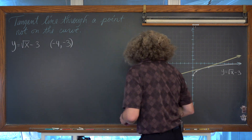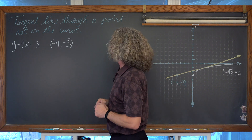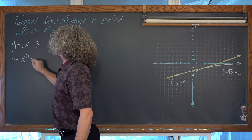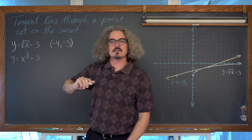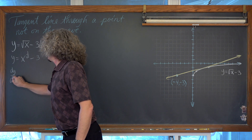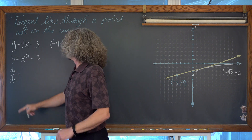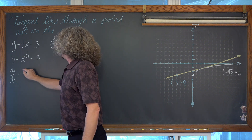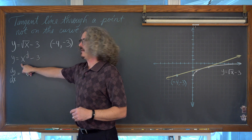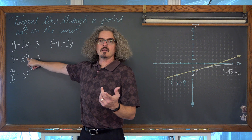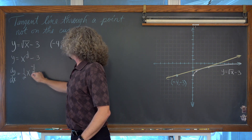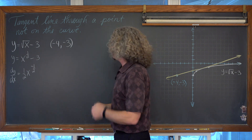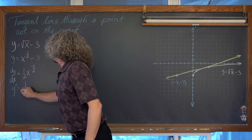Maybe we need to find the derivative of our given function so that we can calculate its slope somewhere. We have y equals x to the 1/2 power minus 3 — I never work with radicals in radical notation. Taking the derivative of the left-hand side gives dy/dx, or y prime. We bring the power of 1/2 down, reduce the power by 1, so 1/2 minus 1 is negative 1/2, and the derivative of the constant negative 3 is 0. So we have y prime equals 1 over 2 times the square root of x.